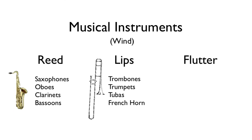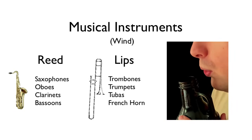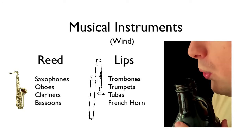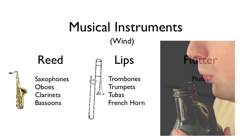Then there are the flutes. What's the source of vibration for a flute? Have you ever blown across a soda bottle to make a sound? When you do so at just the right angle, the air you blow jumps in and out of that hole. That jumping in and out is itself a vibration that gets the column of air in the bottle also vibrating. That's how any flute generates its sound.